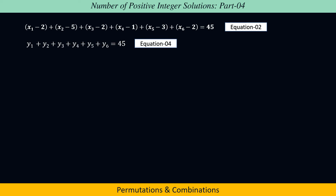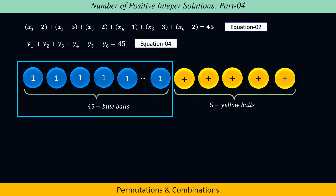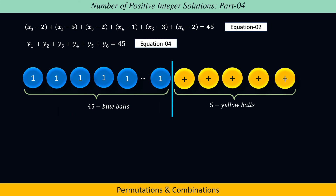This is equivalent to arranging 45 blue colored balls and 5 yellow colored balls. So the total number of ways of arranging 50 balls, in which 45 are of one kind and 5 are of a second kind, is equal to 50! / (45! × 5!), which comes out to be 21,18,760.